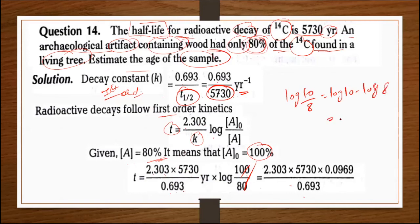Log 10 value is 1, log 8 value is 0.9031. 1 minus 0.9031 equals 0.0969. Dividing by 0.693, the final calculated value is 1845 years.